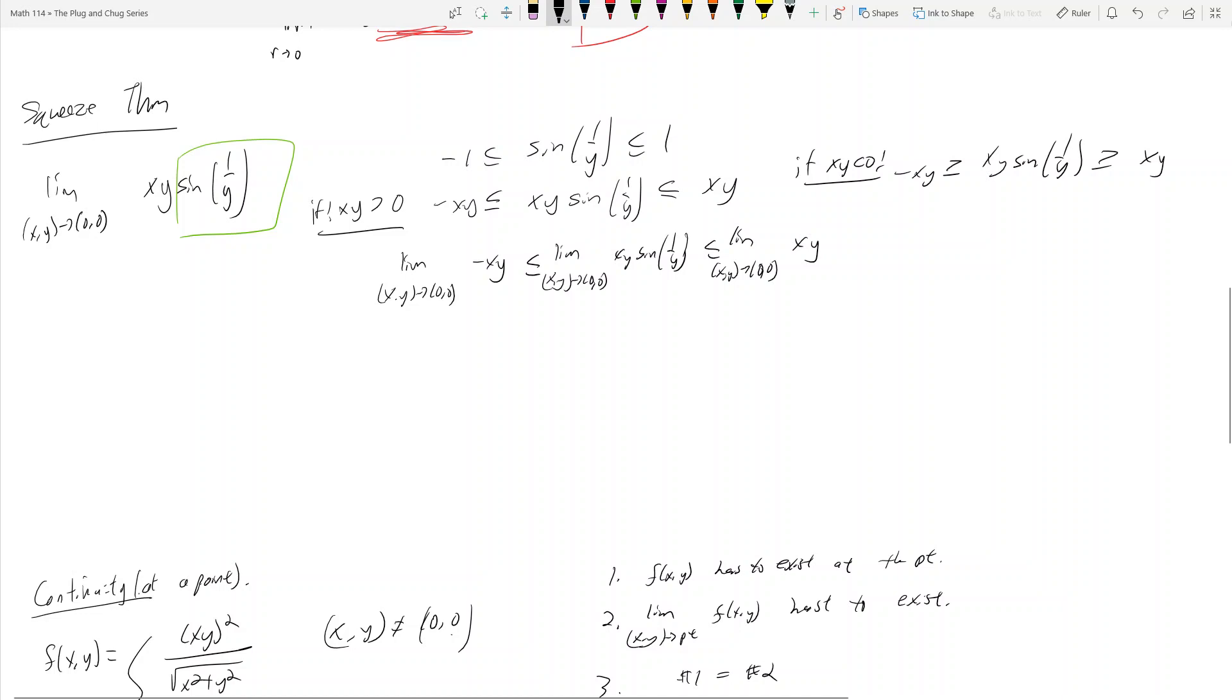And, well, look, what is this guy? It's the limit as x,y approaches 0,0 of negative xy. But I can just plug in 0,0 here. So this is just 0.